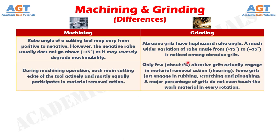Number 6: during machining operation, each main cutting edge of the tool actively and mostly equally participates in material removal action, whereas only about 1% of abrasive grits actually engage in material removal action or shearing. Some grits just engage in rubbing, scratching and ploughing. A major percentage of grits do not even touch the work material in every rotation.